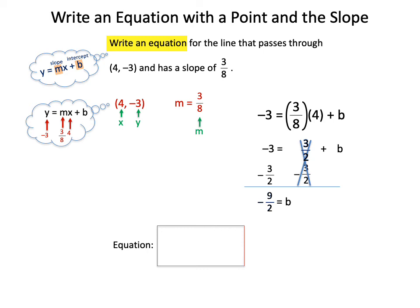Now the big trick on this is when you're at the very end, make sure that you plug in the original slope and the value that you found for b. So your equation is y equals 3 eighths x minus 9 halves.